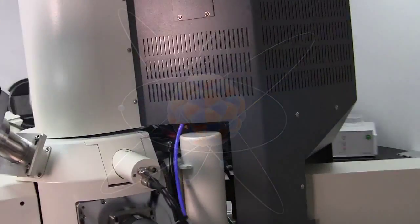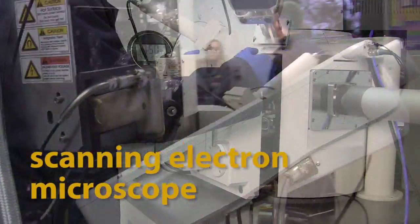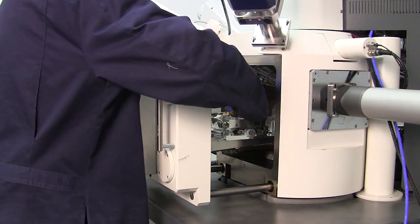This is called a scanning electron microscope. The sample we want to look at is placed inside this microscope. It works by focusing a beam of electrons onto the sample in the microscope.